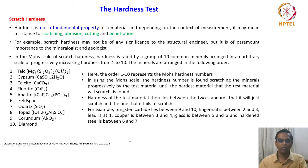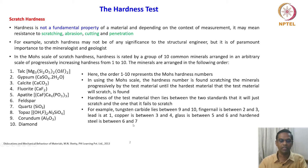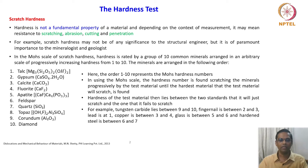For example, tungsten carbide lies between 9 and 10. Fingernail is between 2 and 3. Lead is at 1. Copper is between 3 and 4. Glass is between 5 and 6. And hardened steel is between 6 and 7. So it is quite interesting — just by comparison of a scratch mark on various minerals, you try to assess the hardness of the material. This is one way of assessing the strength, and it is very useful for some people.